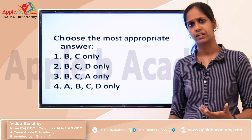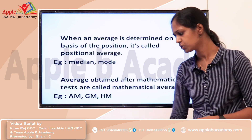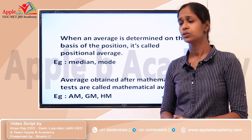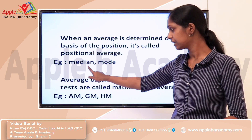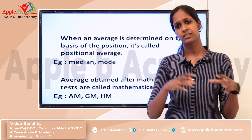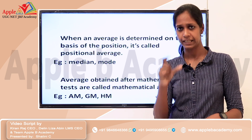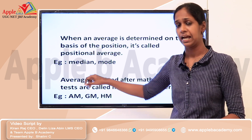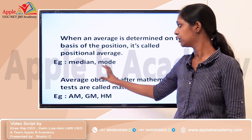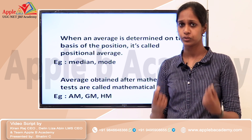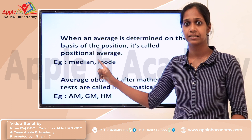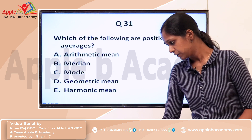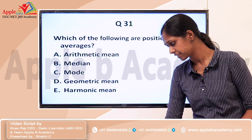When we look at what is a positional average, basically when an average is determined on the basis of position, it is called a positional average. So it is median or mode. Median is found by arranging the series in ascending or descending order and taking the middle value. If it is an even number series, you take the average of the two middle values. Mode is the most repeating value in a series. These two measures depend on where they are positioned.